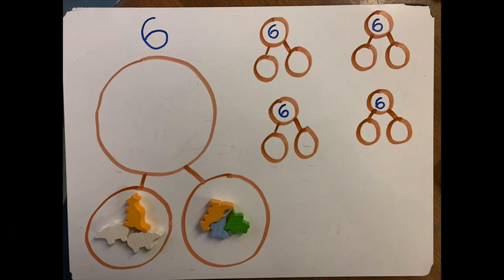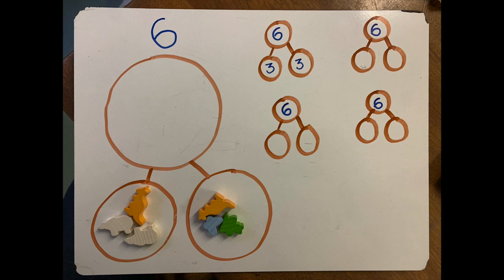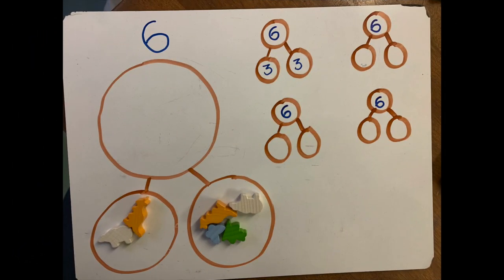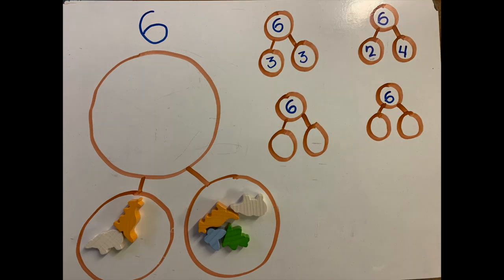I broke six up into two groups. I put them in two different places. Now I can write how many is in each group. Three and three — three and three make six. Now I'm going to change my groups. In one I have two and in one I have four, so I'll write that down in my next number tree.